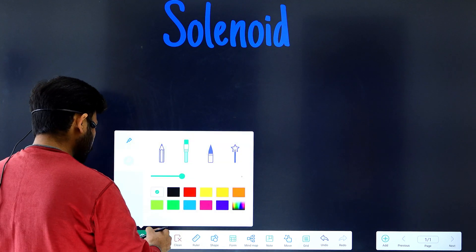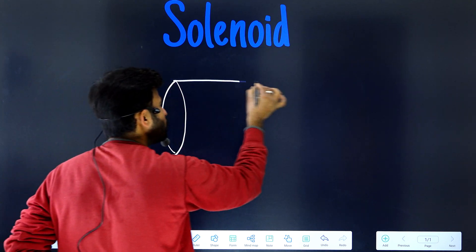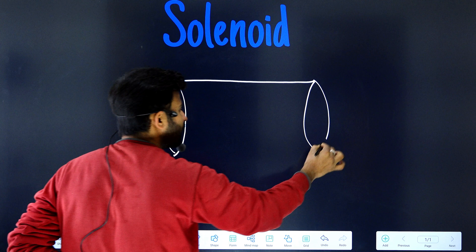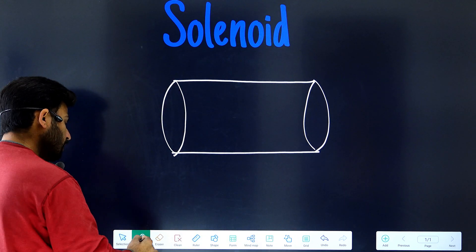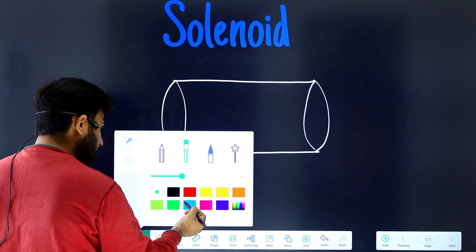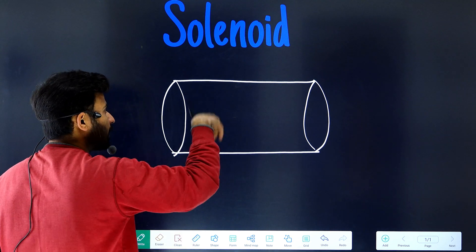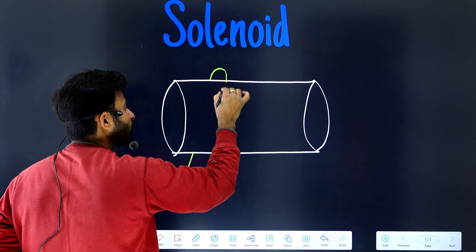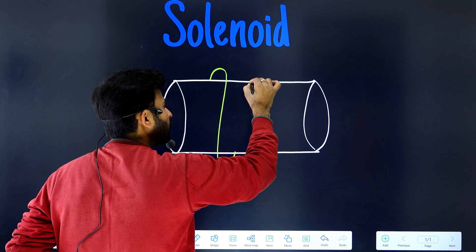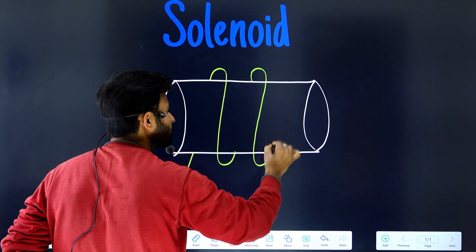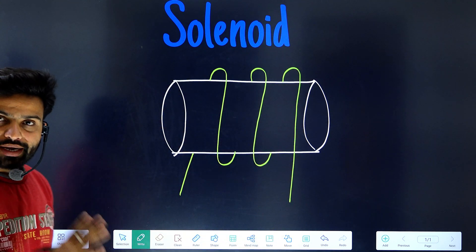First of all, let's understand what a solenoid is. A solenoid is a hollow conductive pipe with copper winding on it. The wiring is arranged so that the current is going from the back side and coming out from the front side, then going from the back side again and coming out from the front side — this is the winding.